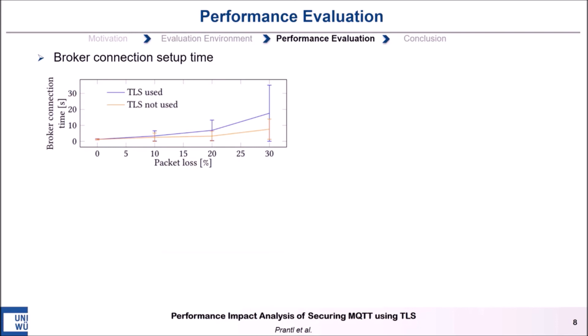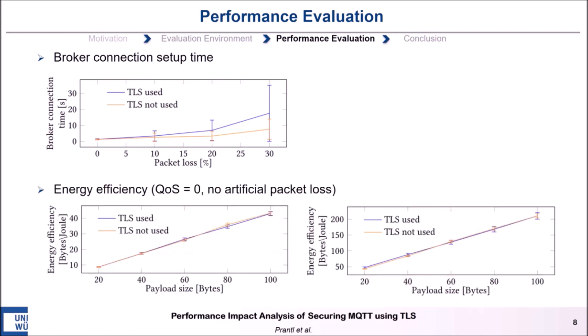The last performance evaluation I want to present is about energy efficiency when using quality of service level 0 under perfect network conditions. I have the following two figures. On the left side we see the energy efficiency of the publishing operation for different payload sizes when the ESP does not use an energy saving mode between publishing operations. On the right side we see the same but the ESP uses an energy saving mode between publishing operations. What we can see in both figures is that there is no significant difference in energy efficiency whether the ESP uses TLS or not. The only notable difference is that the ESP is far more energy efficient when using deep sleep between publishing operations.